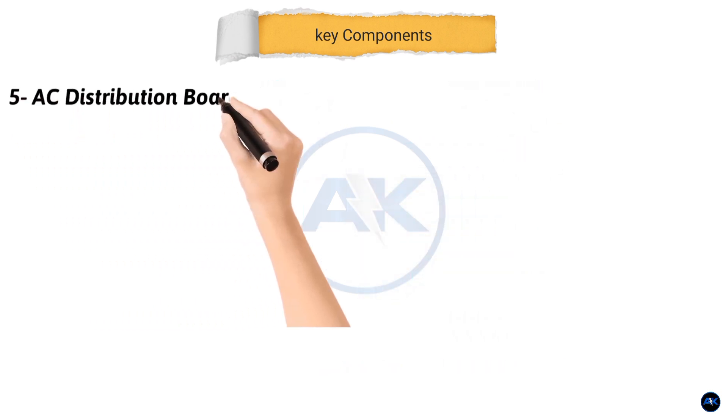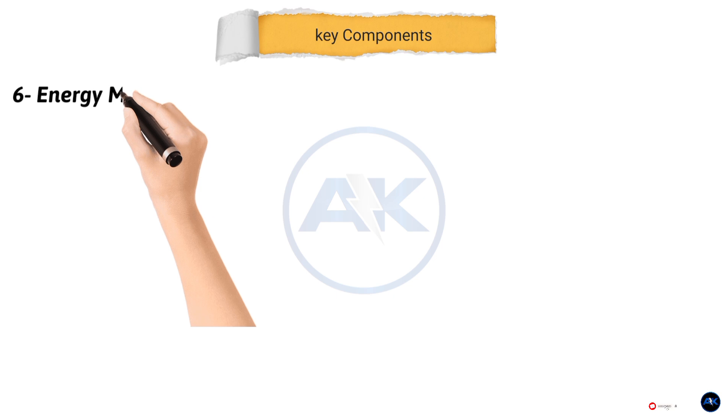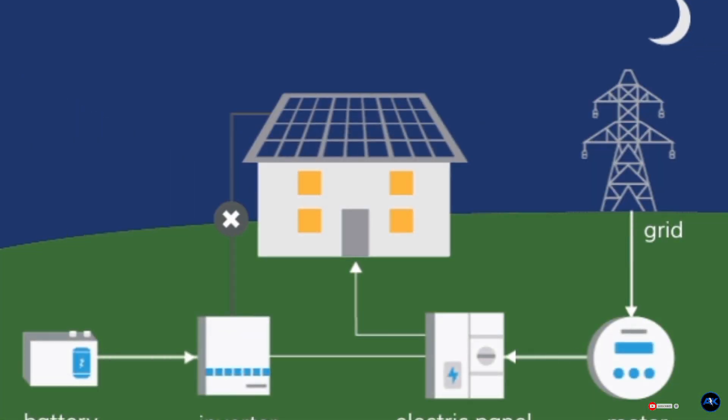Fifth, AC distribution board or ACDB. This protects the AC side, distributing power to your home and connecting to the grid. Sixth, energy meter. This measures the electricity generated by your system and in some cases, the electricity you consume from the grid.